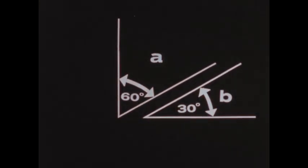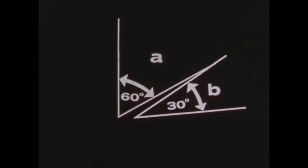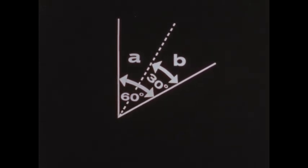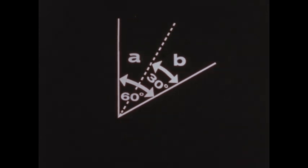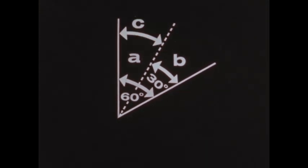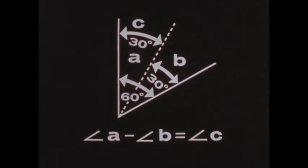Two angles may also be subtracted. We can do this by placing angle B on angle A, so that the vertex and a side of angle B coincide with the vertex and a side of angle A, and the common side is not between the angles. If angle A measures 60 degrees and angle B measures 30 degrees, angle C, the new angle that's formed, measures 30 degrees. Angle A minus angle B equals angle C.